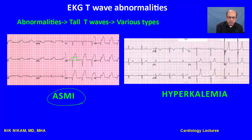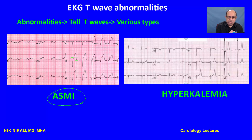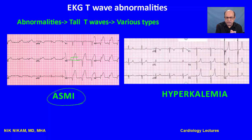We can see tall peaked T waves in patients with acute myocardial infarction. In the hyperacute phase, there is lifting of the ST segment from the baseline along with shifting of the T waves, creating an impression of the ST segment blending almost imperceptibly into the upstroke of the T waves — classic tombstone appearance. Most are localized to a specific coronary territory. Involvement of the high anterior wall and anterior wall suggests a proximal left anterior descending artery occlusion, with the diagonal and distal diagonal branches involved.